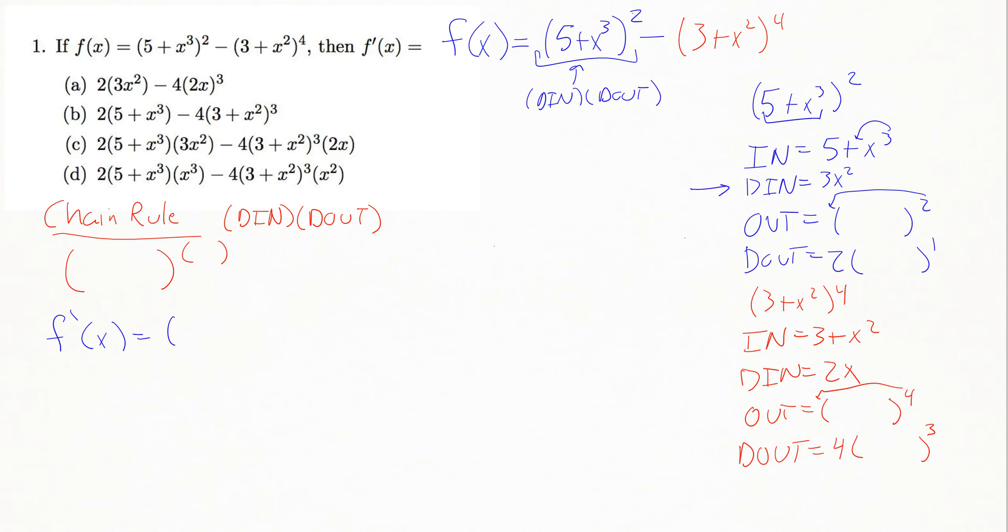So the derivative of the inside times the derivative of the outside. So the d in was the 3x squared piece. The d out is this 2, and then again, I leave everything alone that I already took the derivative of and subtract 1 from the power. Then I've got a minus sign in the middle here, so minus. And then I'm going to do another d in, d out on my second piece here. So my d in on this would be 2x. My d out would be bring the 4 down, leave all the junk alone you already took the derivative of, and then subtract 1 from the power.